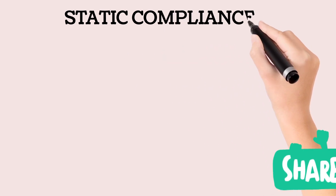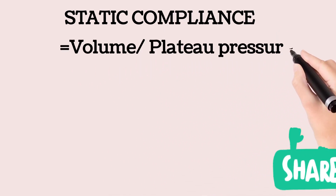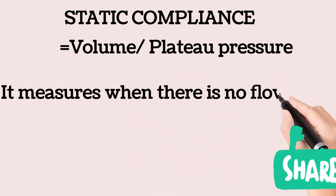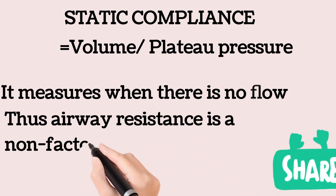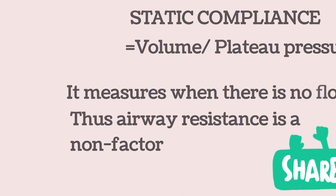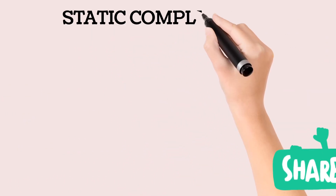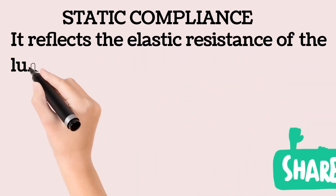Static compliance is calculated by dividing the volume by the plateau pressure. This is measured when the flow is momentarily stopped. When airflow is absent, airway resistance becomes a non-factor.